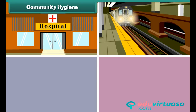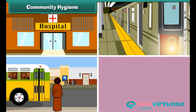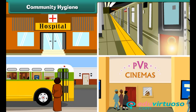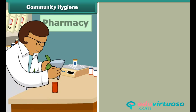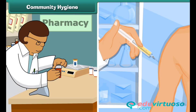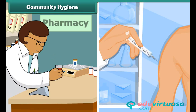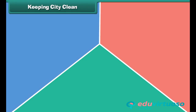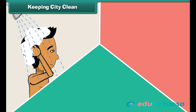Community hygiene: Next, we must ensure community hygiene by keeping public places like hospitals, railway stations, bus stands, and cinema halls clean, and by making medicines and vaccines available to people to cure and prevent diseases.